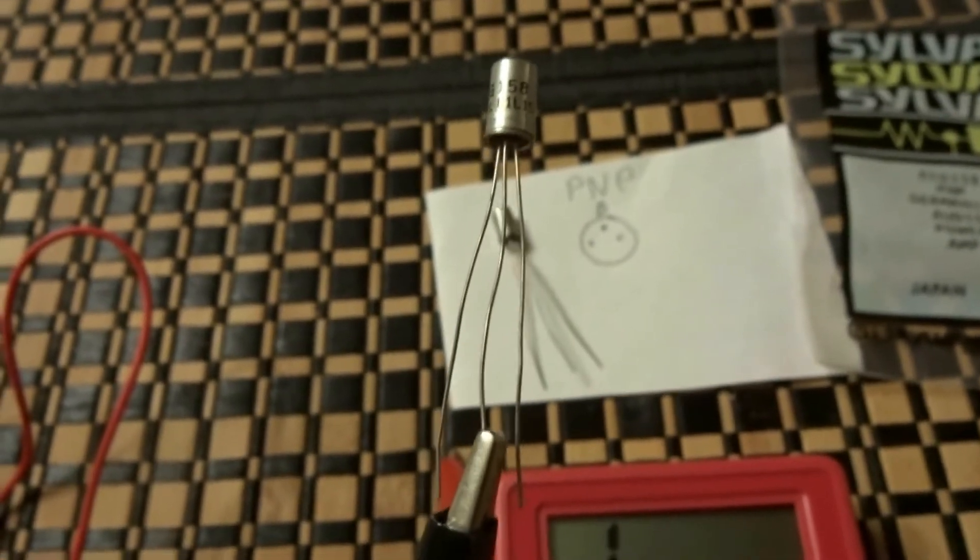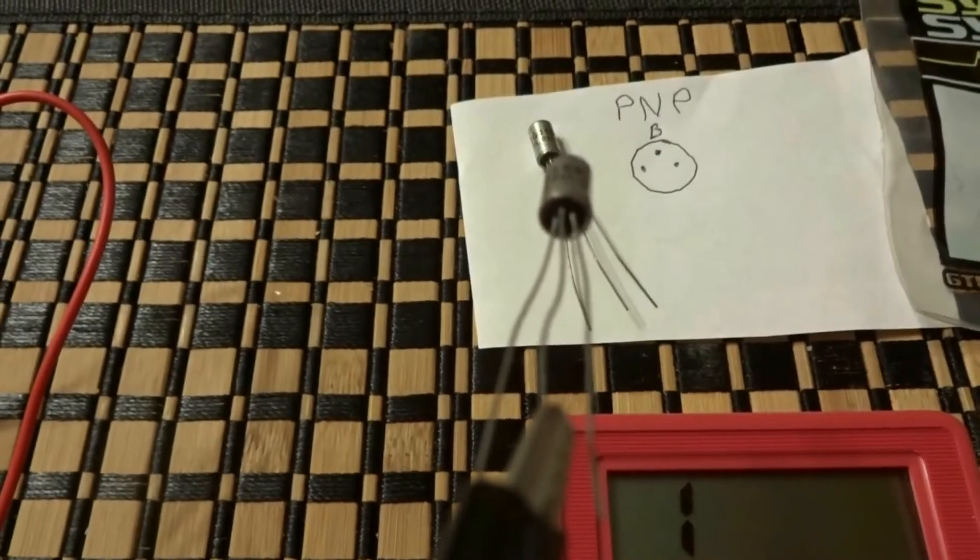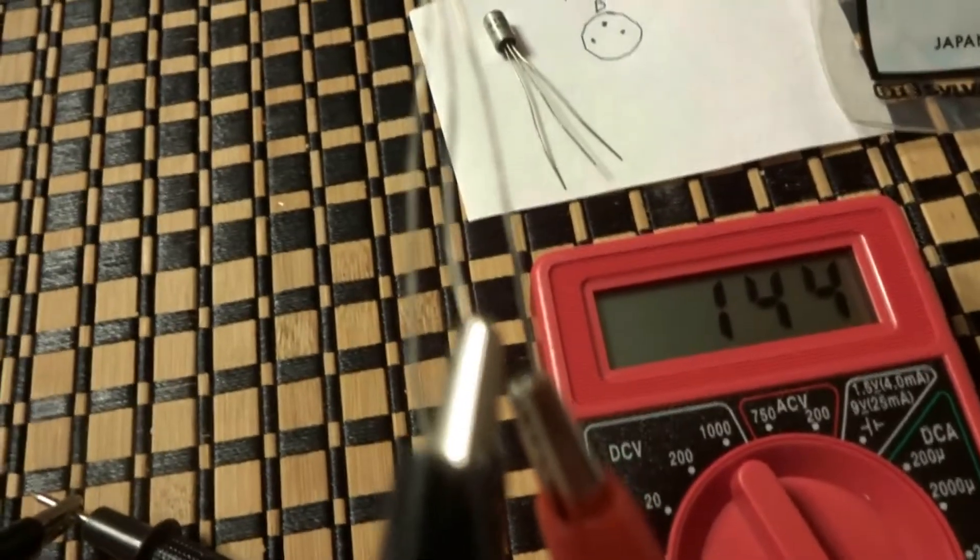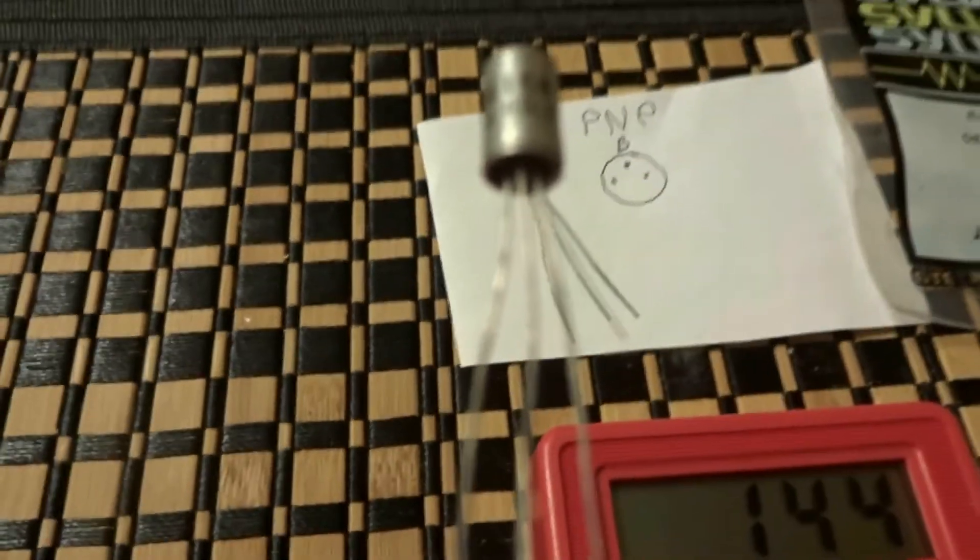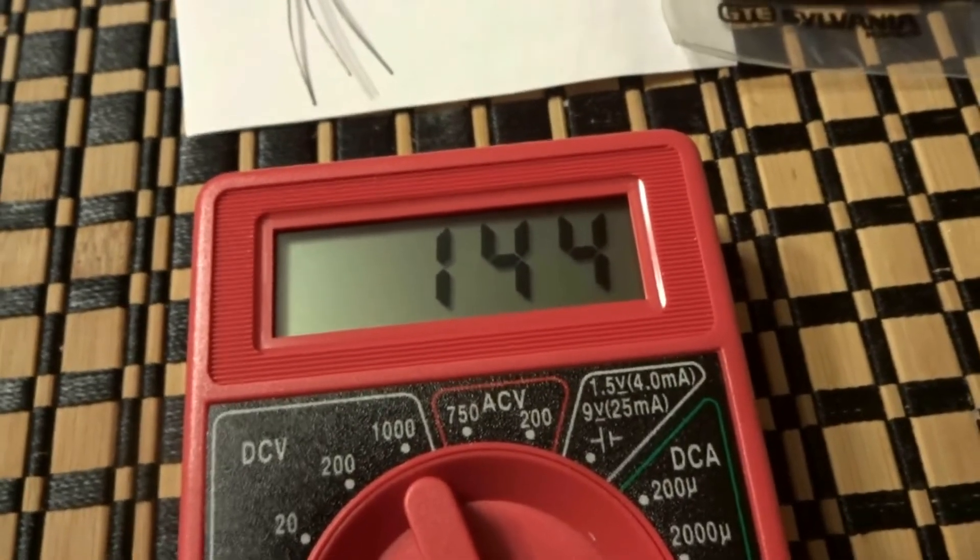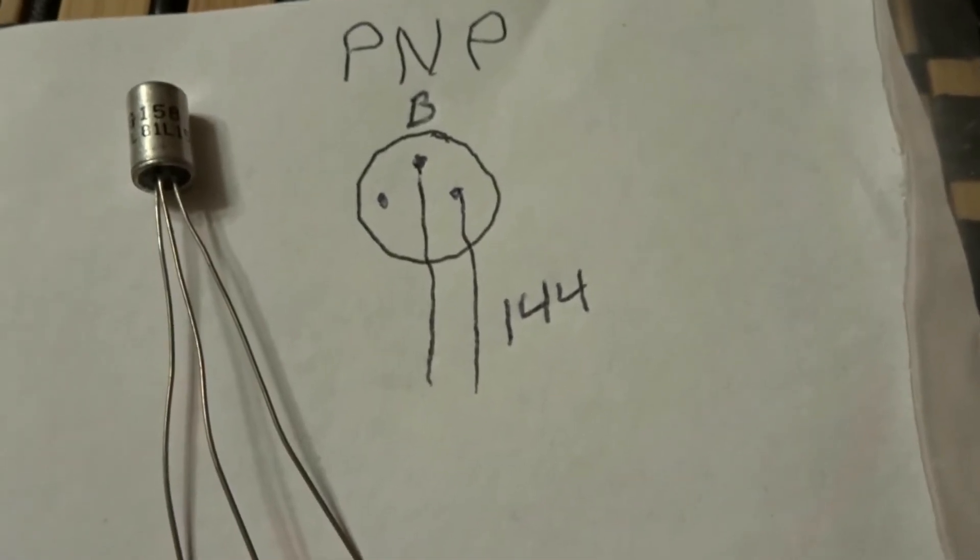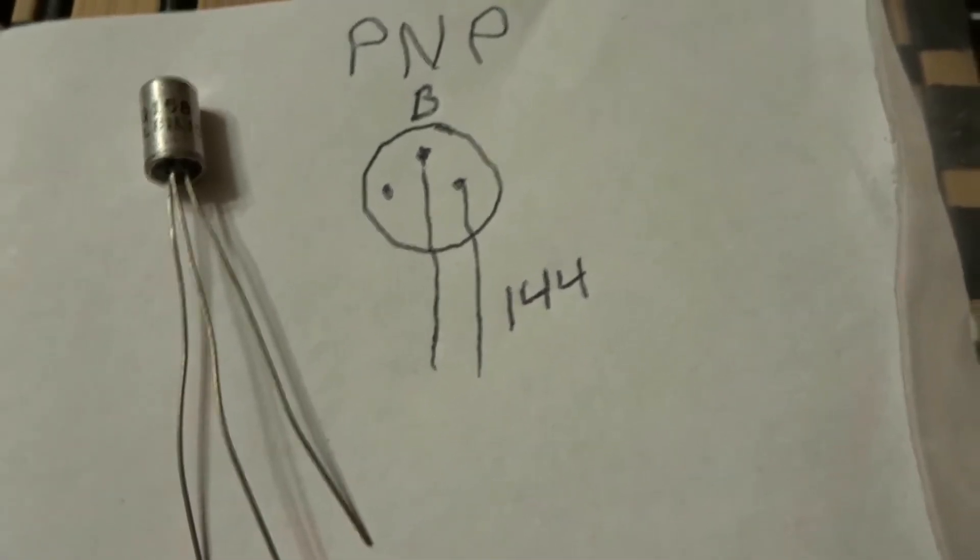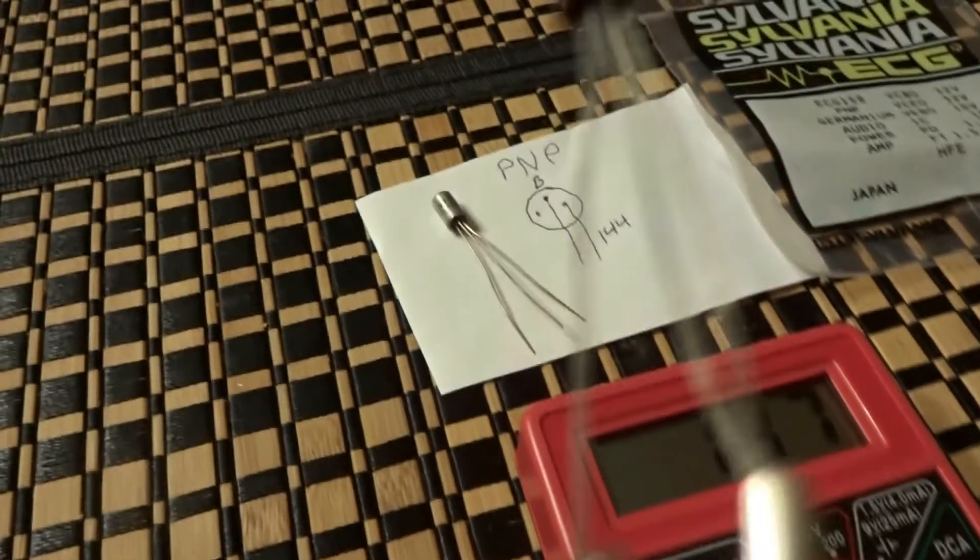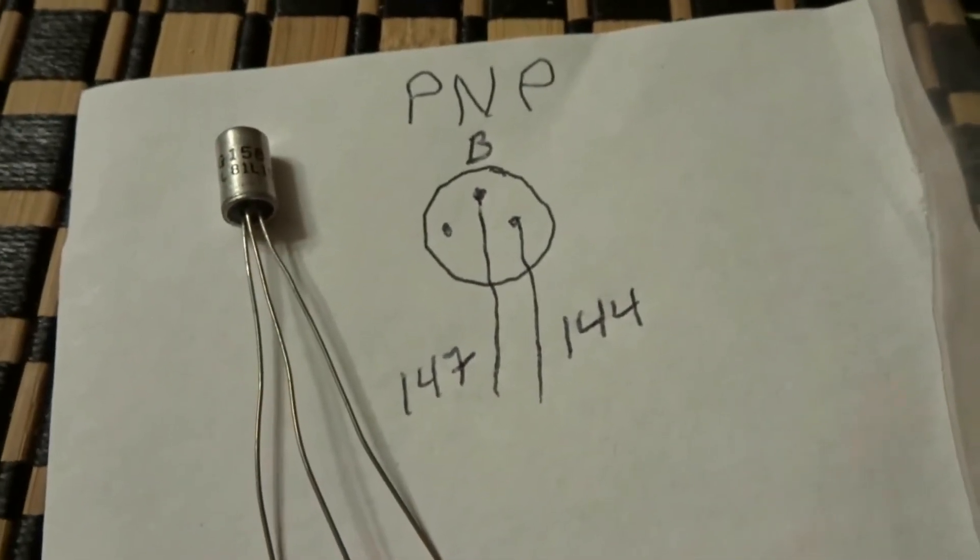We're gonna do the right one first, and you can see how we're looking at it. You can see what side we're on, and we're gonna take a reading. That's 144, so we wrote 144 down. Now we're gonna switch the lead to the left side, and there's our reading, 147. So we write down 147.